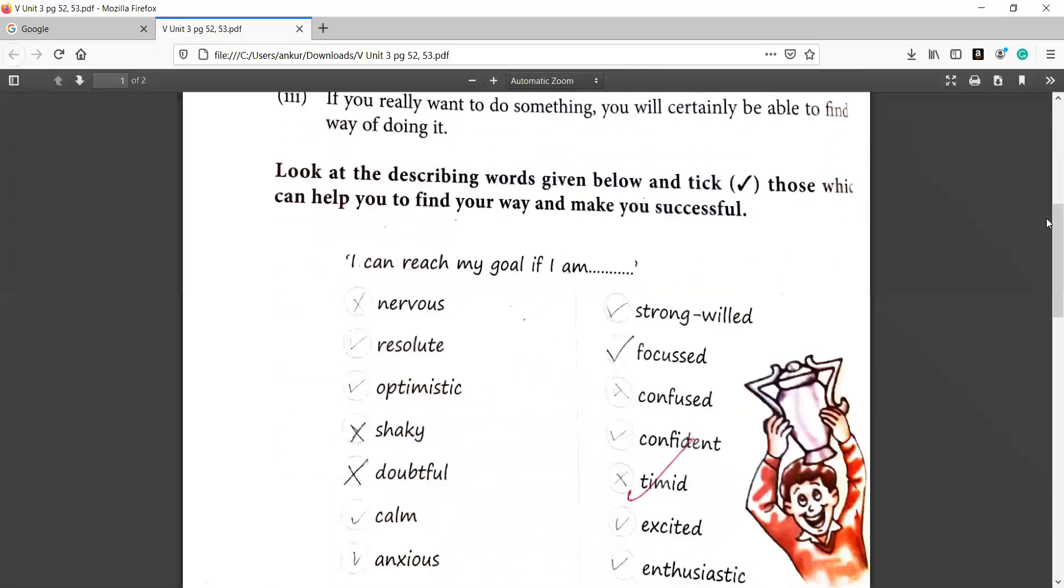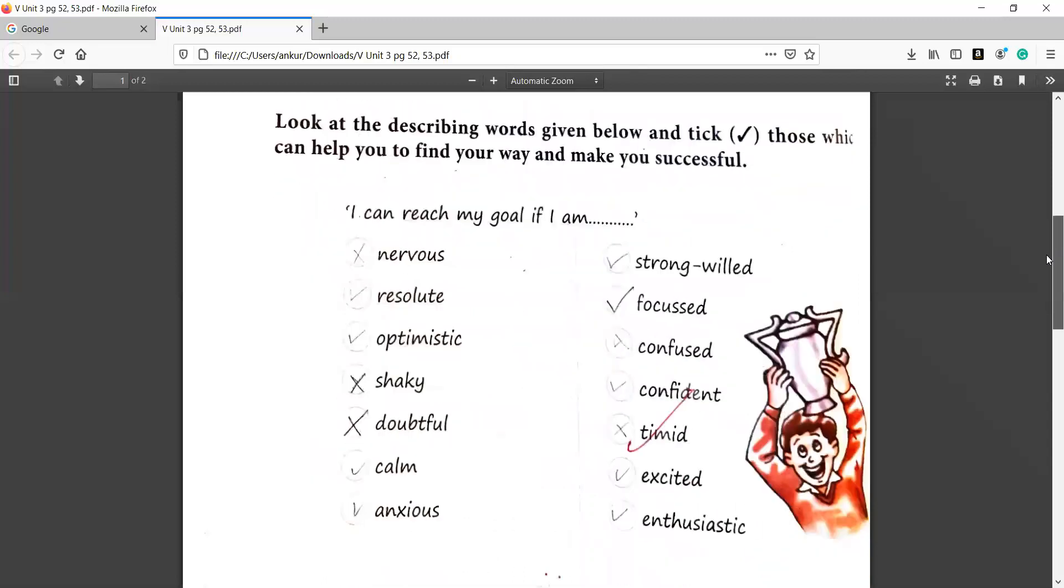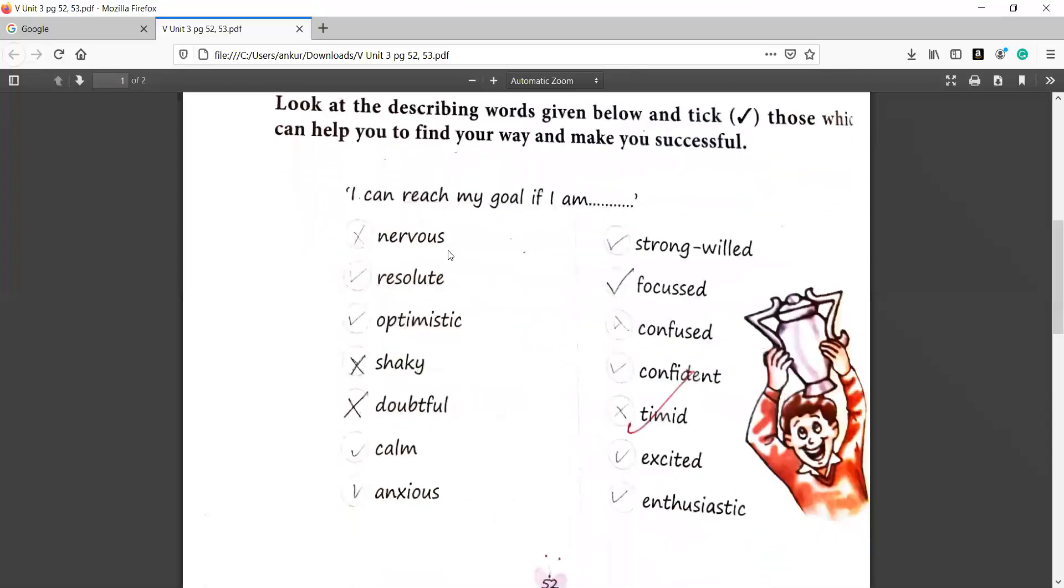Now next, you have to look at the describing words and tick those which can help you to find your way and make you successful. And many of you told me during the class that ma'am, the meaning of all these words is not clear. So I am discussing it here with you. These are synonyms for positive character traits and which cross are negative character traits.